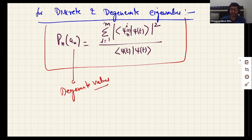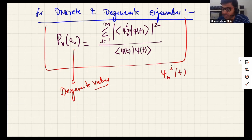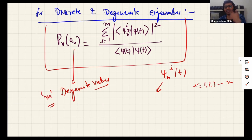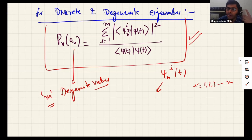Degenerate eigenvalue aₙ occurs more than once. For all those occurrences, we calculate the corresponding eigenstates |ψₙᵢ(t)⟩ where i runs from 1 to m, giving m degenerate eigenstates. We then take the modulus squared of the inner product of each eigenstate with |ψ(t)⟩ and sum them all, according to the degenerate probability formula.